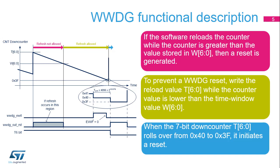This diagram illustrates how the window watchdog operates. When the 7-bit down-counter rolls over from 0x40 to 0x3F, it initiates a reset — this happens if the application software does not refresh the window watchdog on time. The early interrupt, if enabled, can be generated when the down-counter reaches 0x40. If the software refreshes the watchdog while the down-counter is greater than the value stored in bits W[6:0], a reset is generated — this happens when the application refreshes the watchdog too early. No interrupt is generated in this case.